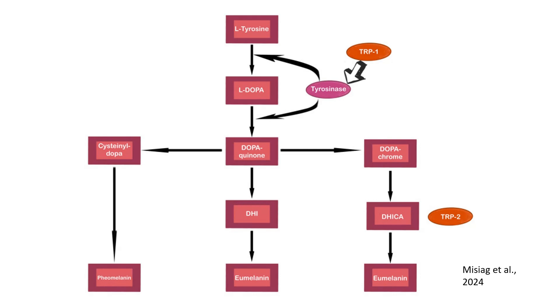L-dopa is oxidized by tyrosinase into dopaquinone, a central intermediate in melanogenesis. From here, the pathway diverges into two branches leading to eumelanin or pheomelanin production.